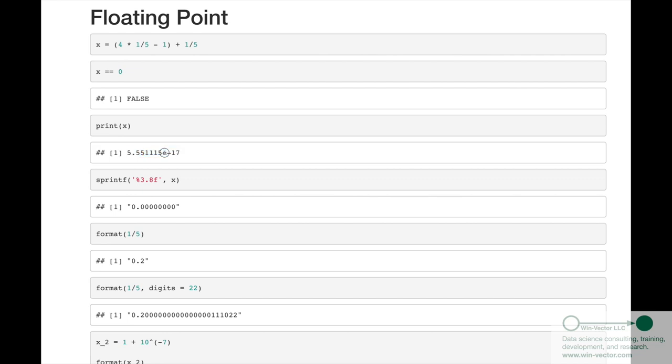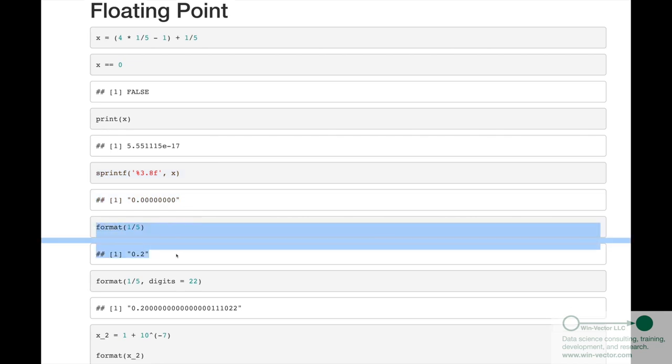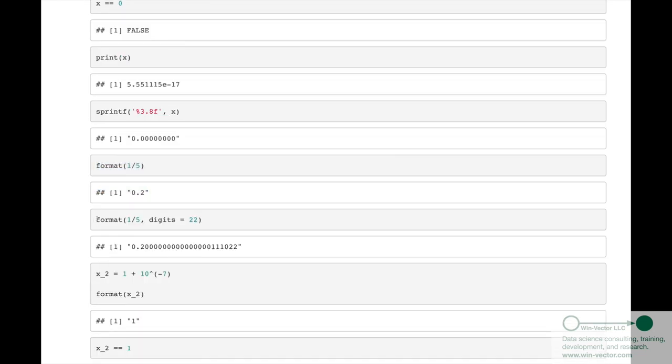We get 5.5 times 10 to the minus 17. This is called scientific notation. The e here means times 10 to this exponent. So this is a very tiny number. However, in many printing formats, that would be simplified to just zero. For instance, sprintf is a common pretty printer. Or, if we call format on one-fifth itself, we get in decimal the 0.2. However, if we format it to more digits, we see it only starts as 0.2. It actually has some garbage down here because the binary representation isn't the same as the decimal.